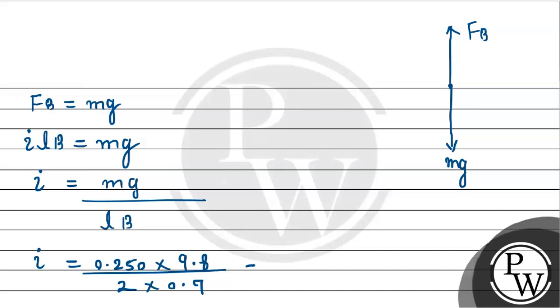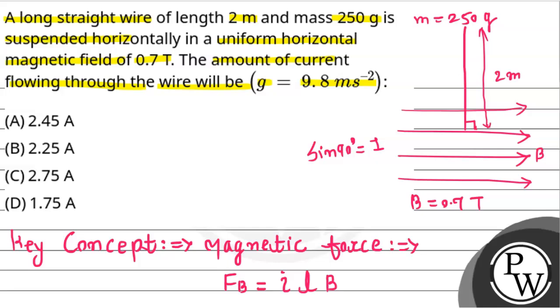So on multiplying and simplifying, the current flowing through the conductor comes out to be 1.75 ampere. This will be my required answer for this question. According to given options, option D is correct. So this is the required solution. I hope you understand.